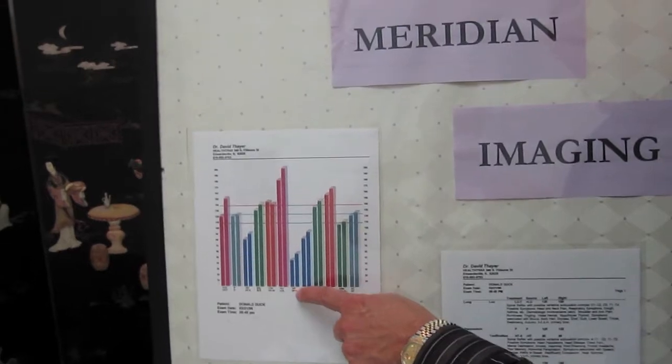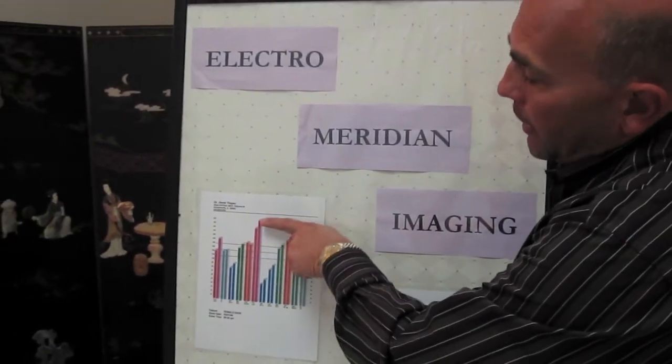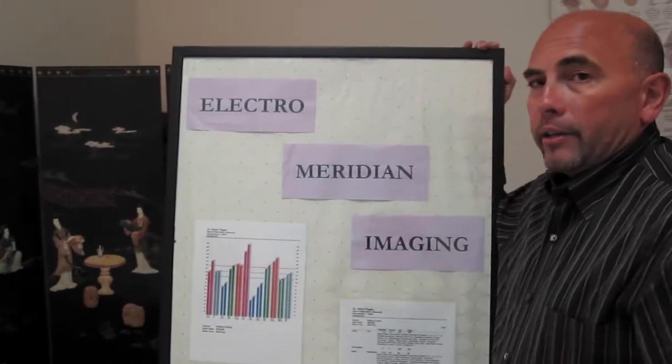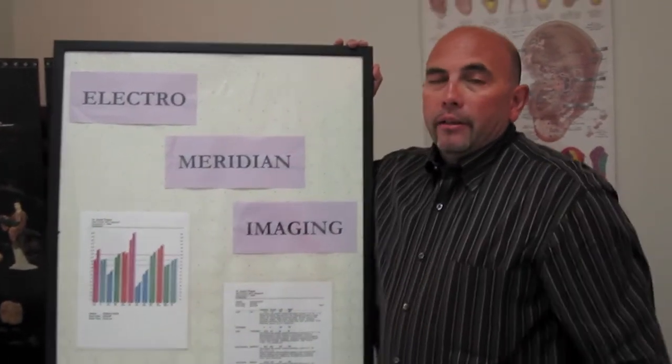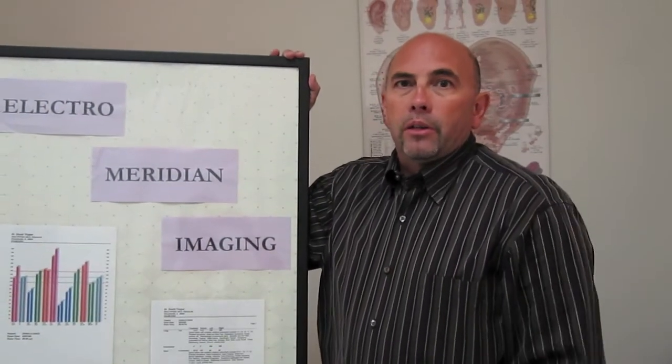So what we do based on this test is we can stimulate points that would raise these up to get more into the norm and lower these down to get back into the norm. So as the body becomes more balanced, the patient will become more balanced, and the symptoms will start to clear up.